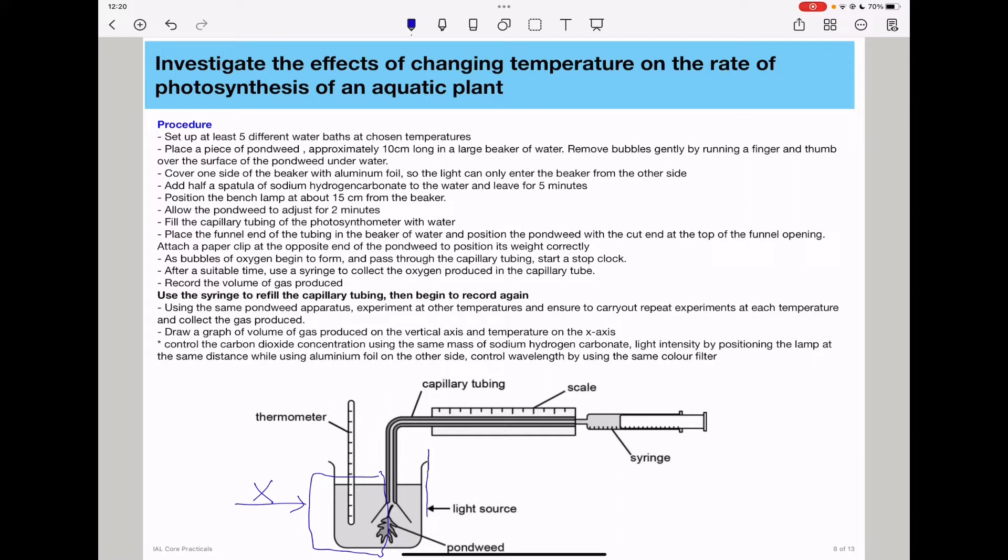We will position a color filter between the experiment and the light source to ensure that the plant is exposed to the same wavelength of light. The procedure is as below. Set up at least five different water baths at chosen temperatures.